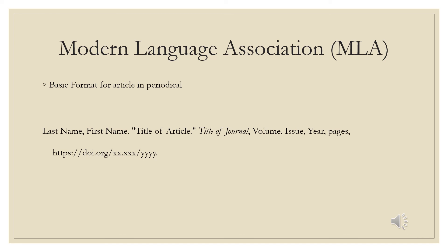Modern Language Association, MLA. Similar to APA, MLA starts with the author's last name, but then has the whole first name. Instead of the year, the title of the article in quotation marks in title case comes next. Title of journal italicized, volume, issue, year, and then pages, followed by the DOI or URL. The citation should be double spaced and have a hanging indent. Make sure to use proper punctuation and the most recent edition.